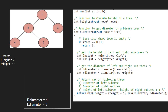Now first we find the max of l_diameter and r_diameter. Since 3 is greater than 1, l_diameter is the greater of the two. Now we compare l_diameter with l_height plus r_height plus 1 which is equal to 4. We return the max of l_diameter and 4. As 4 is greater than 3, we return 4 which is the diameter of this binary tree.